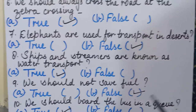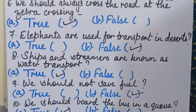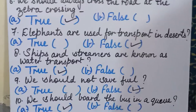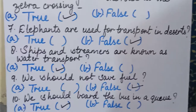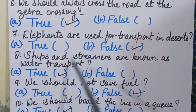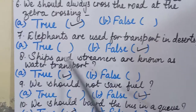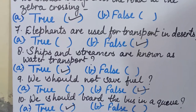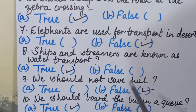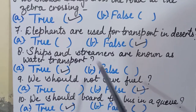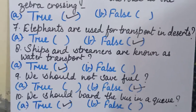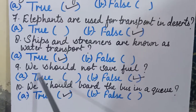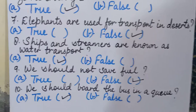In deserts we use camels, not elephants — that is why camels are known as the ship of the desert. The eighth sentence: 'Ships and steamers are known as water transport' — true or false? This is true, because ships and steamers are means of water transport.